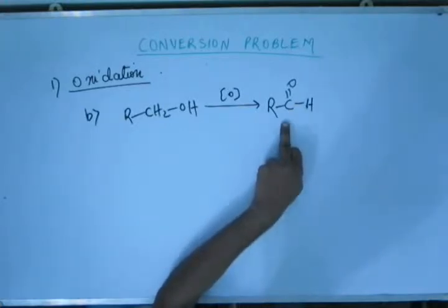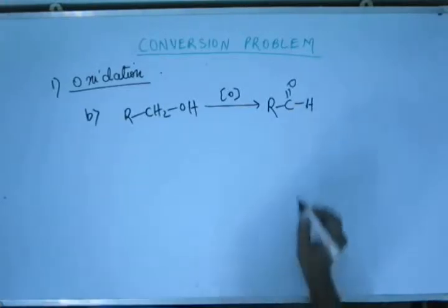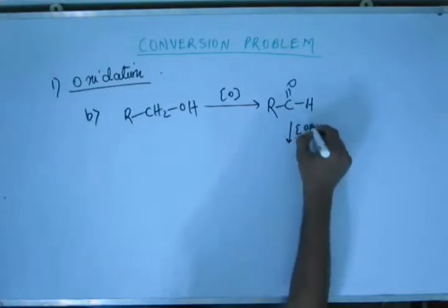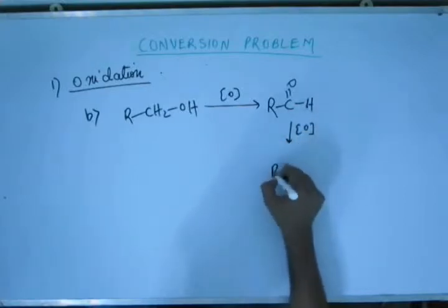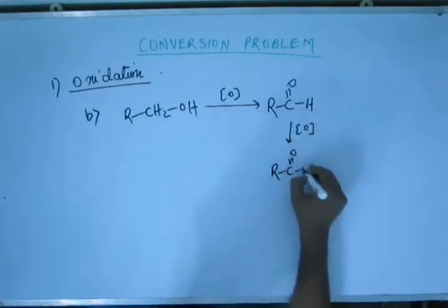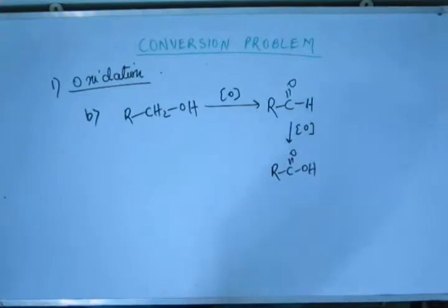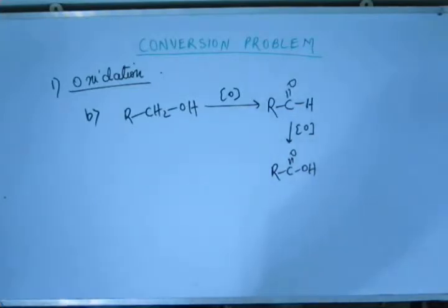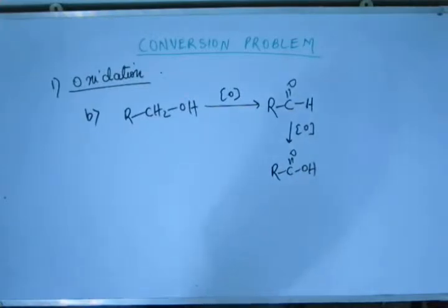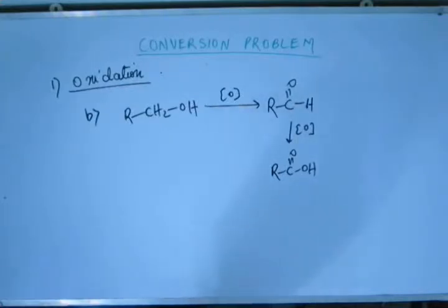Aldehyde will be very quickly oxidized to give us, finally, carboxylic acid. So this is one way. If you add K₂Cr₂O₇ on a primary (1°) alcohol, you will get carboxylic acid. If you add KMnO₄ on a primary (1°) alcohol, you will get carboxylic acid as the final product. So this is another way of oxidizing alcohol.